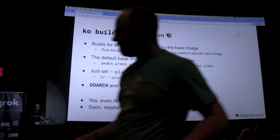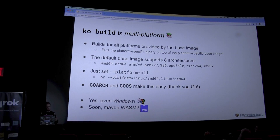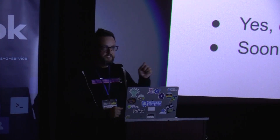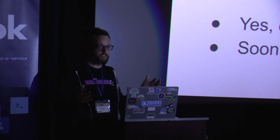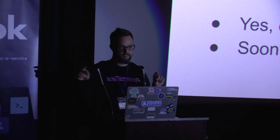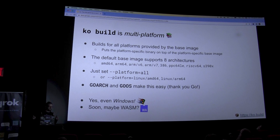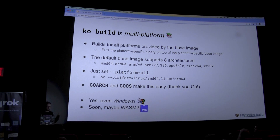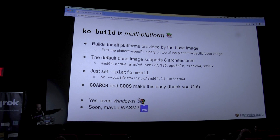Another huge benefit of Ko — which we get for free by building on Go — is multi-platform support. Go has incredible cross-compilation support, and Ko just takes advantage of it. If you do ko build --platform=all, it will say: I'm going to go into this base image that has support for these eight architectures, do GOOS=linux and GOOS=windows go build for each of those architectures, stitch it all up, and put it in the registry. If you only need a couple of platforms you can specify which ones you want. Once again, Go makes this really easy for us — Ko does almost nothing, Go just does all of this magic for us. Yes, even Windows. If you've ever had to build a Windows container image, I am so sorry.